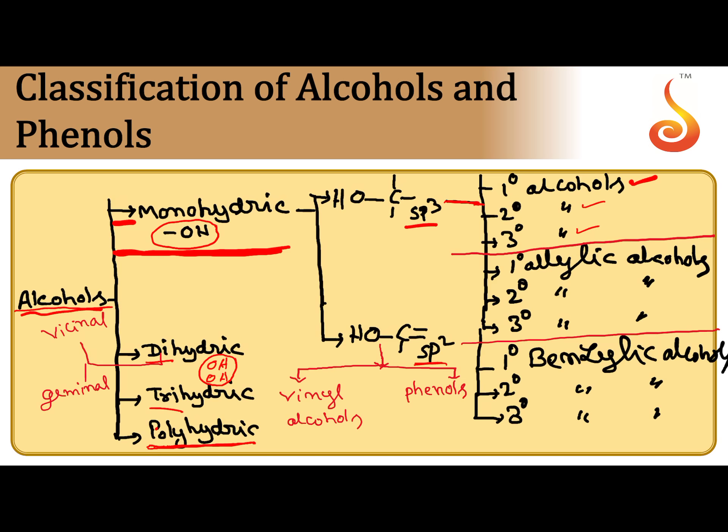Dihydric alcohols are again divided into two types — two OH groups are present. If both are on the same carbon, they are called geminal dihydric alcohols. If two OH groups are on adjacent carbons, they are called vicinal diols. Based on the number of hydroxyl groups present, alcohols are divided into monohydric, dihydric, trihydric, and polyhydric. For example: methyl alcohol has only one OH — monohydric. Ethylene glycol has two OH groups — dihydric. Glycerol has three OH groups — trihydric.